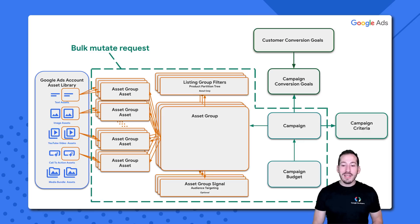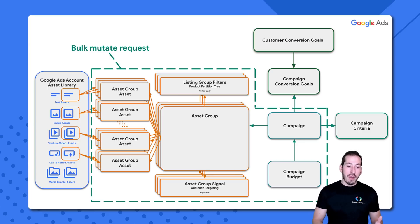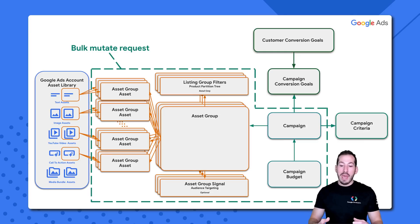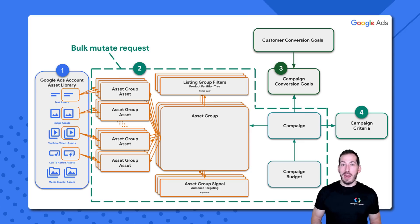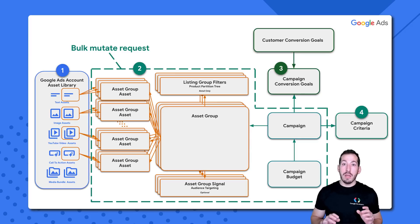As you can see, this actually ties pretty closely to what we saw on the last page. On the left, we have our asset library. In the middle, in that light green dotted box, we've got the asset group, campaign, and campaign budget. And then we can add some custom configuration options by setting our campaign goals as well as some custom campaign criteria. In the code, there are four requests that we're going to make that do this entire thing.